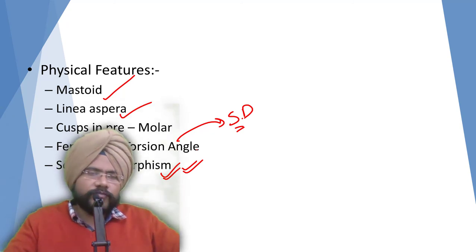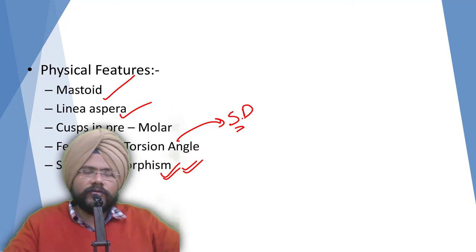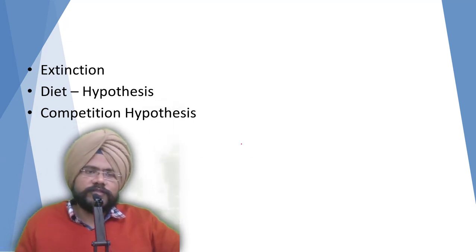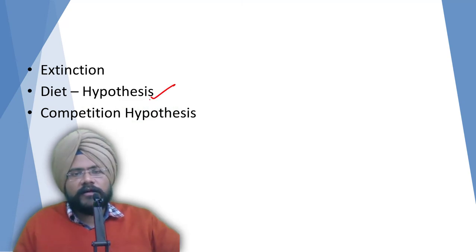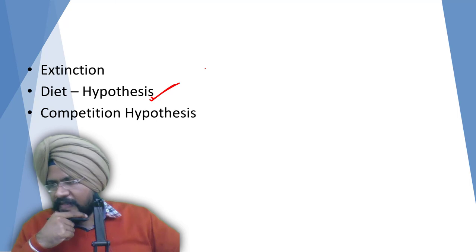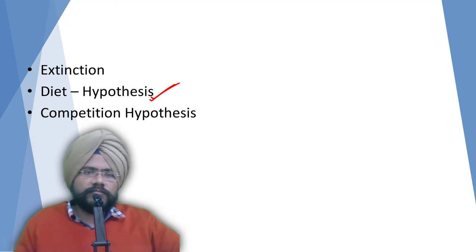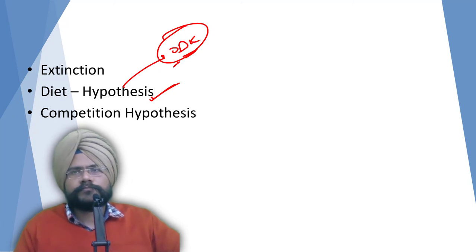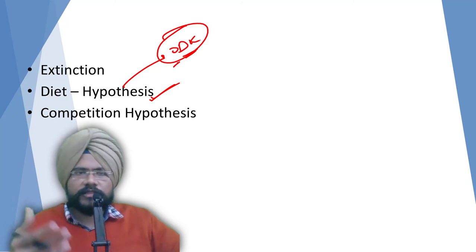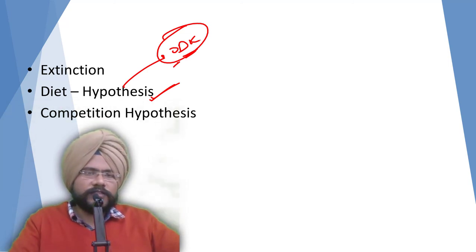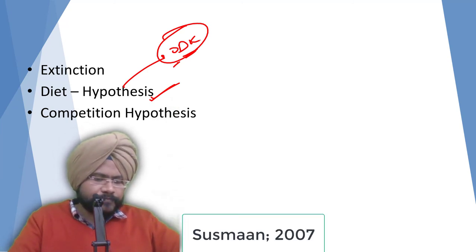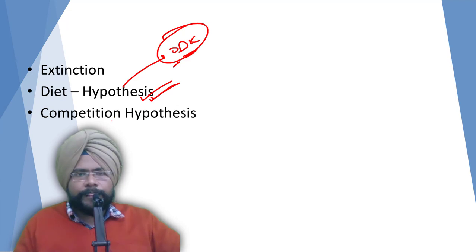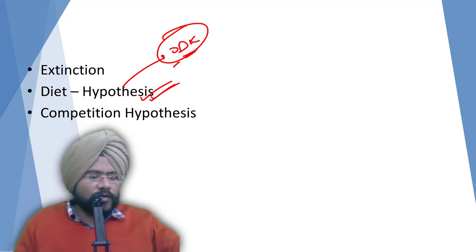These are the physical features that are necessary to write about. For extinction, there are two hypotheses. The first is the diet hypothesis, which aligns with Raymond Dart's ODK culture hypothesis. Some recent research has also substantiated the diet hypothesis. The diet hypothesis states that Australopithecus was much adapted to eating a vegetarian diet.